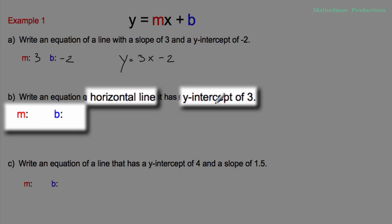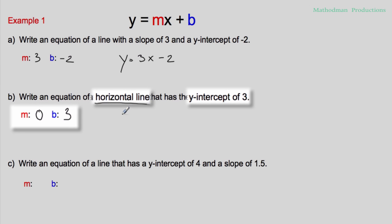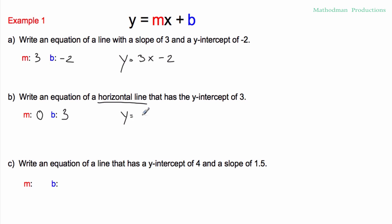Letter b: write an equation of a horizontal line that has the y-intercept of three. We're only given a y-intercept of three, but it says it's a horizontal line. What do you know about horizontal lines? They have a zero slope. So the equation is y equals zero x plus three, which is the same thing as y equals three.